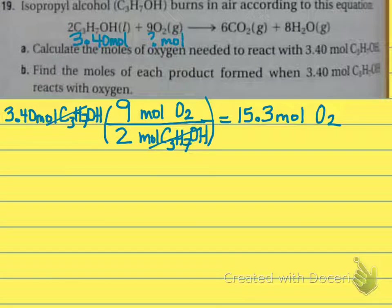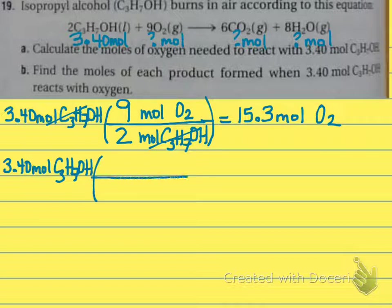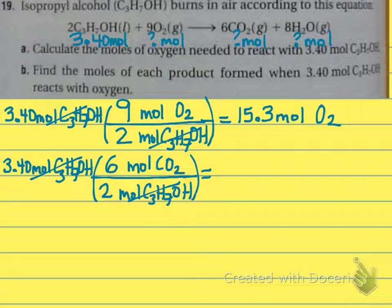Letter B: calculate the moles of each product formed when the 3.40 moles of this reacts with oxygen. So now we want the moles of carbon dioxide and the moles of water — those will be two separate problems. We still start with our given: 3.40 moles of our alcohol. We're going to use a mole ratio. I'm going to do moles of carbon dioxide first. My coefficient of carbon dioxide is 6, and on my alcohol it is 2. So 3.4 times 6 divided by 2. With 3 significant figures, we get 10.2 moles of carbon dioxide.